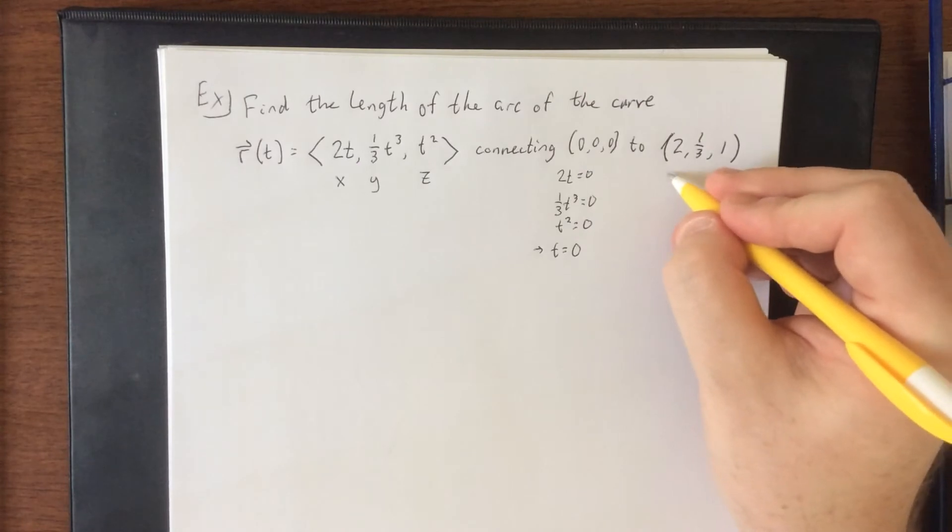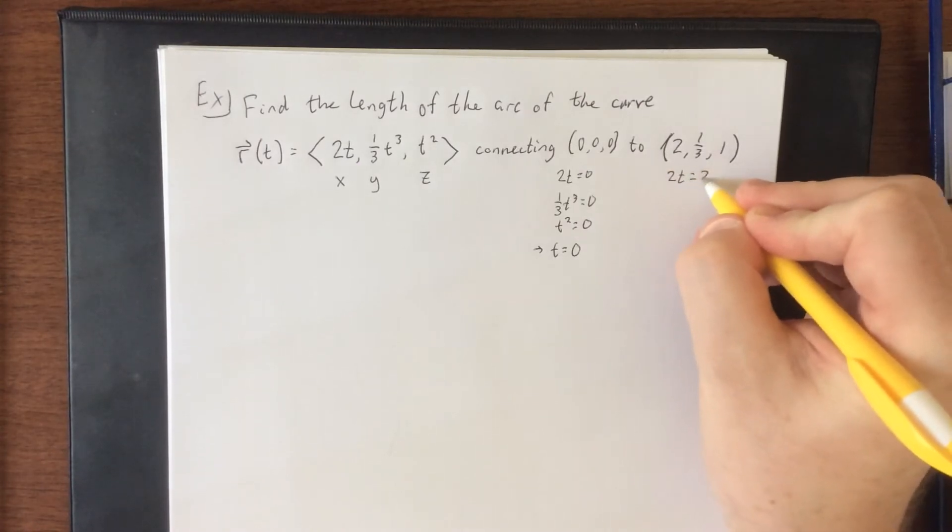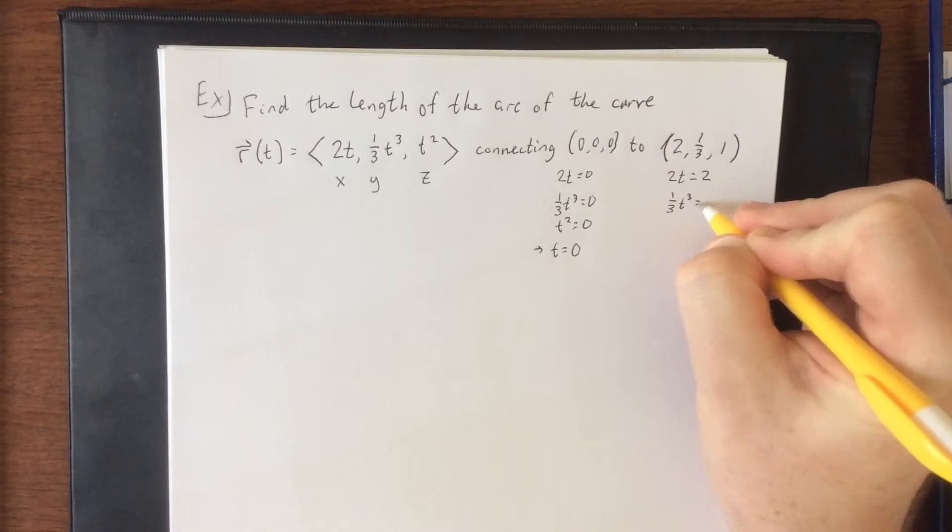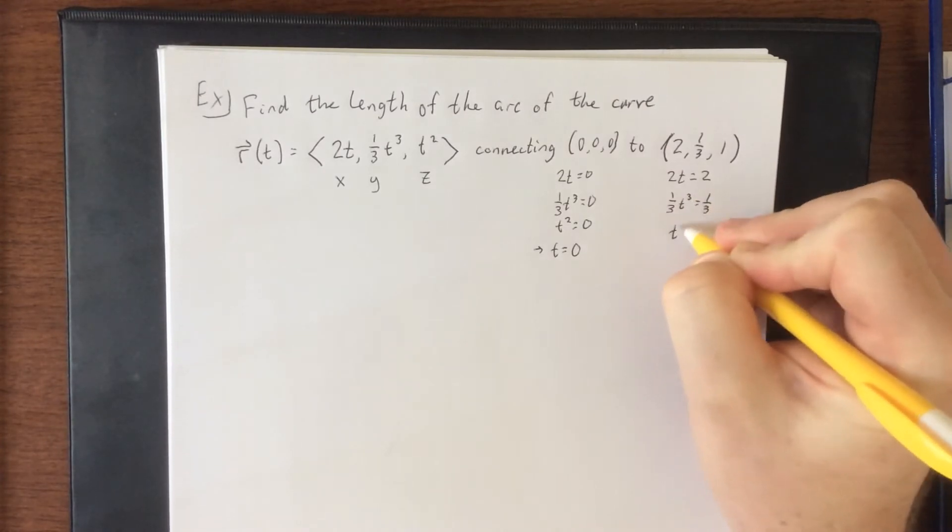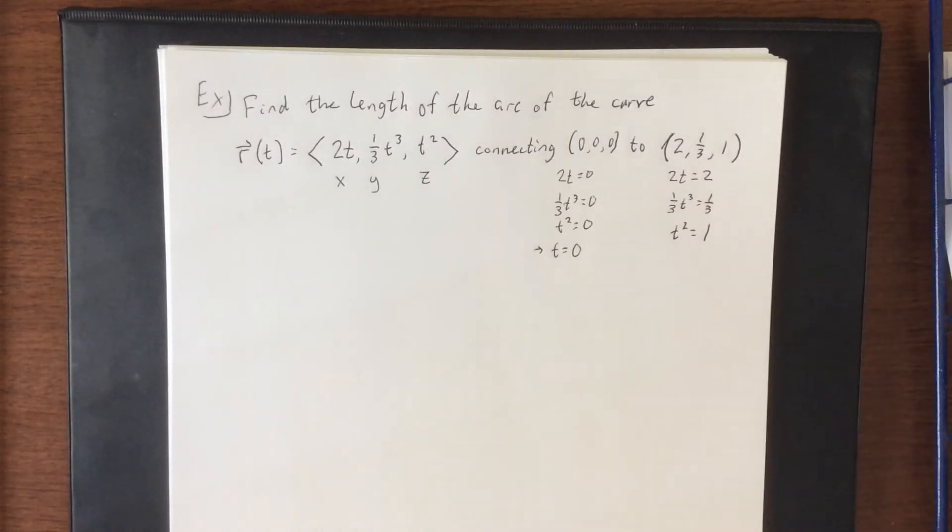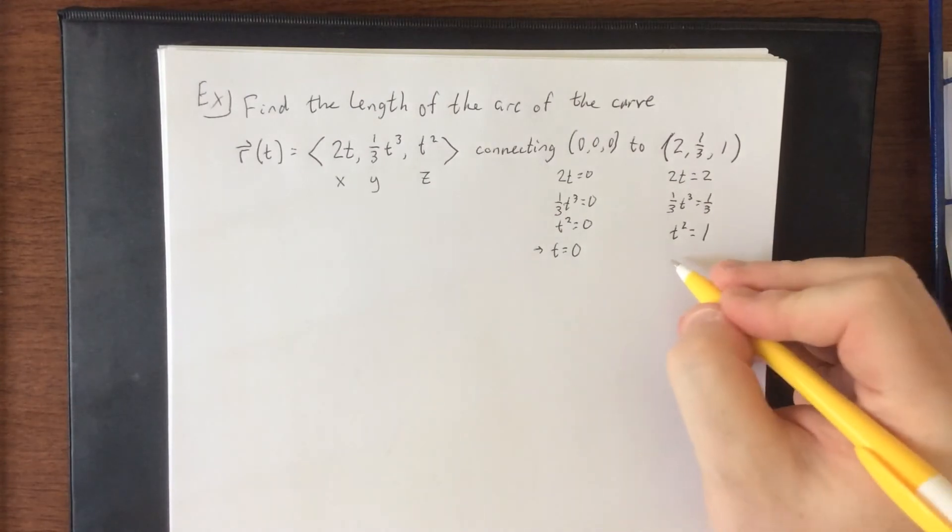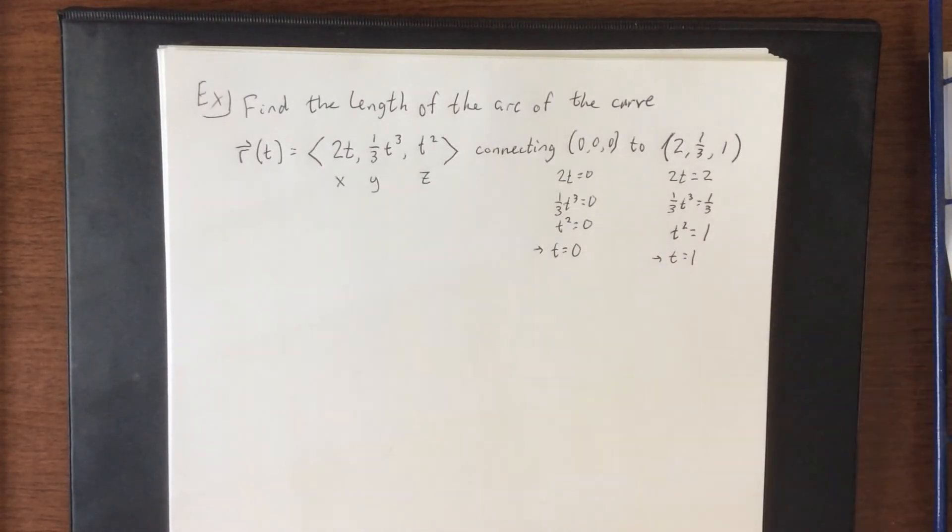For the second point, that would be 2t equals 2, one-third t cubed equals 1/3, and t squared equals 1. Solve whichever one you want to determine that the upper bound is going to be t equals 1.